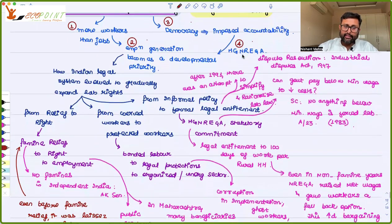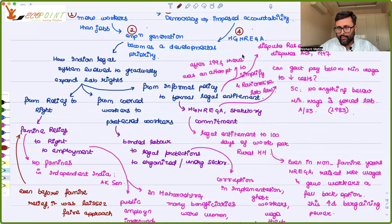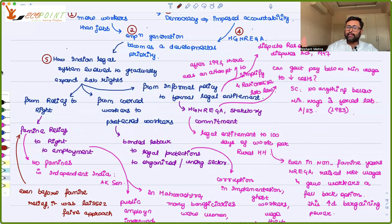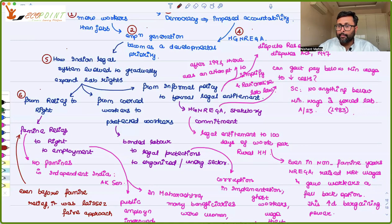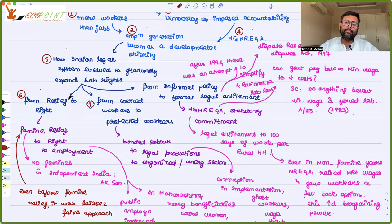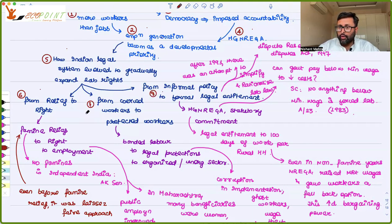The question is: how has the Indian legal system evolved to gradually expand labour rights? We are going to answer that. Initially, there was just relief provided to labour, which expanded into a formal right. Earlier there were coerced and bonded workers; now you have protected workers. Earlier it was just a policy to provide employment; now it is a legal entitlement, and if the government fails to deliver, people can go to the court of law.